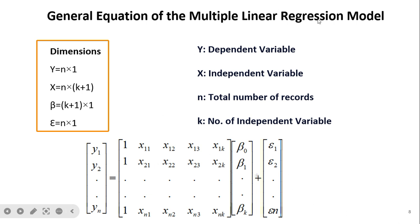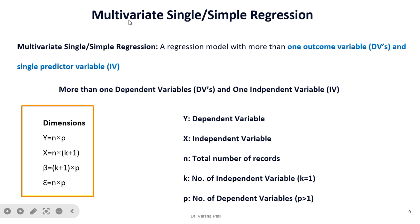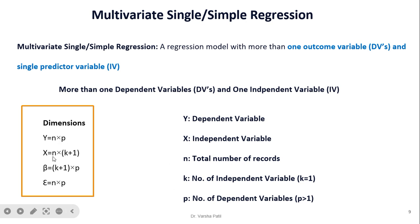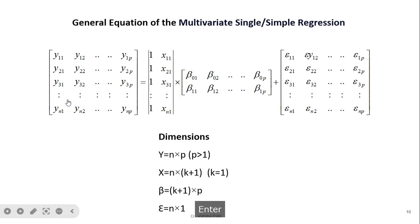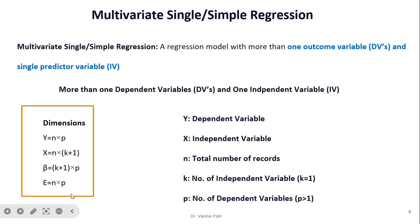Now we will see the two types of multivariate regression. The first type is multivariate simple regression, where there is more than one dependent variable but only one independent variable, so K equals 1. Y becomes N×P, where P is the number of dependent variables. X is N×(K+1), but since K=1, it is N×2. Beta is 2×P, and epsilon is the same dimension as Y, that is N×P, because for every record epsilon is associated.